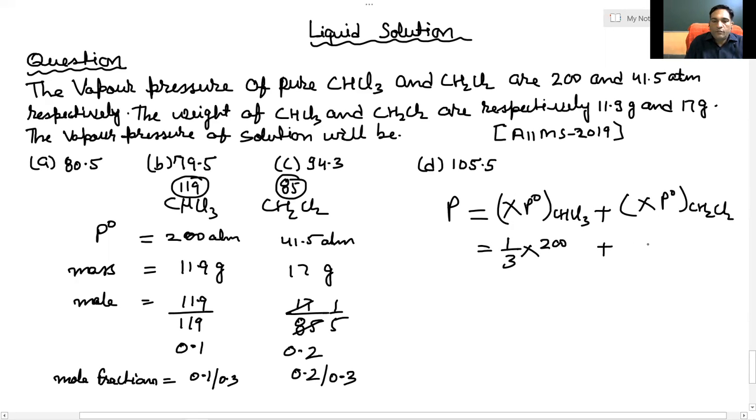CH2Cl2 mole fraction is 2 by 3, vapor pressure is 41.5. We can use a smart calculation method here. Since denominator is 1 by 3, if we multiply 41.5 by 2, we get 83. Divided by 3, taking LCM, 3 will come, 283 divided by 3.